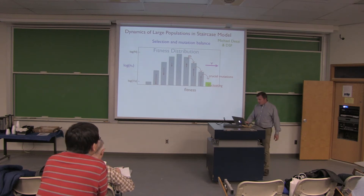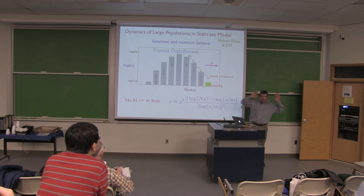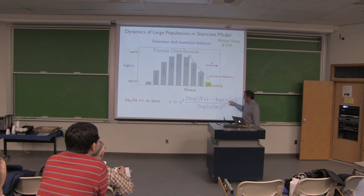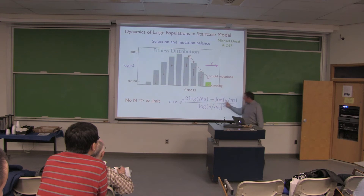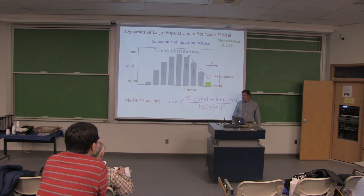What does this give us? A dependence on the rate of mutation which has no well-defined thermodynamic limit. In infinite N, the population just races up and keeps accelerating. Instead, we get something which only logarithmically depends on the population size and mutation rate. Notably, the combination N times M — the rate of producing mutations — doesn't come in at all; N and M are separated out. It wasn't even obvious which combinations of parameters would come in, and one ends up with this very weak, logarithmic dependence on population size.